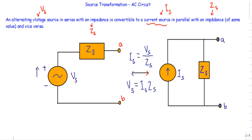So source transformation theorem works in both directions. I can convert a voltage source in series with impedance to a current source in parallel, or if I have a current source in parallel with an impedance Zs, I can convert that current source back to a voltage source. This is known as source transformation theorem.